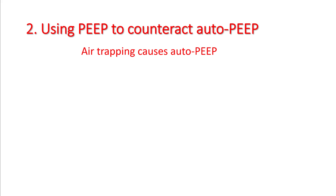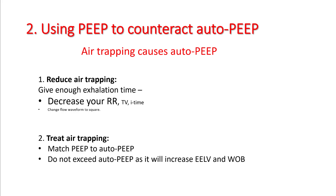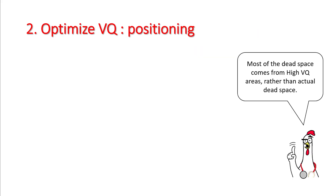Air trapping causes auto-PEEP, so it is very important to monitor and treat it. To reduce air trapping, give enough exhalation time — the best way to do that is to decrease your respiratory rate. You can also drop tidal volume and inspiratory time. Treat air trapping by matching PEEP to auto-PEEP; do not exceed the auto-PEEP number, as it will increase your end-expiratory lung volume and work of breathing. A detailed discussion is available in my video on how to set up respiratory rates.